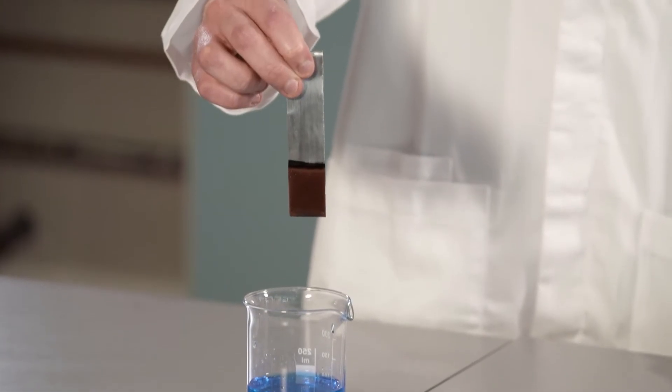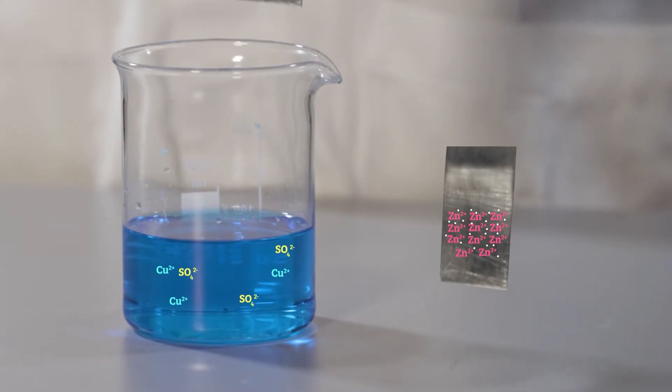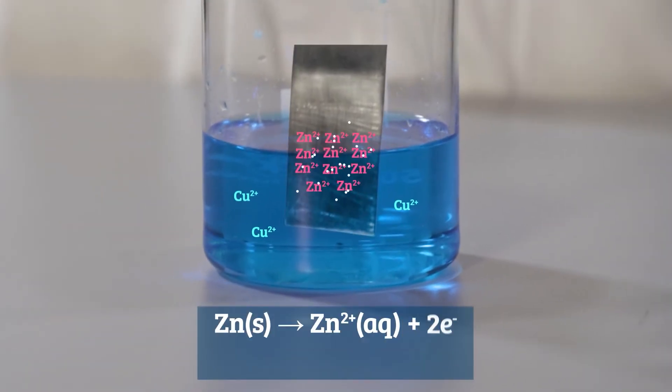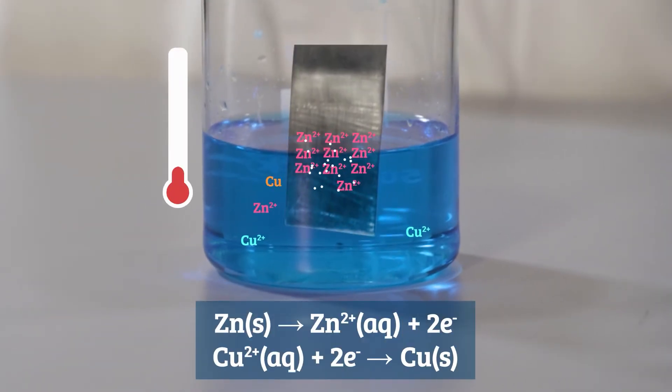As we can see our copper two plus ions have been reduced to form solid copper metal on the surface of the zinc. The zinc metal has been oxidized to form zinc two plus ions.